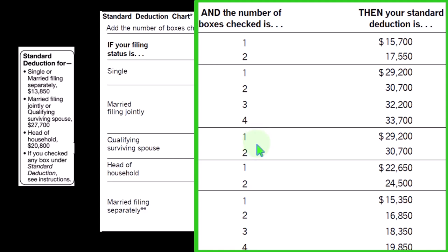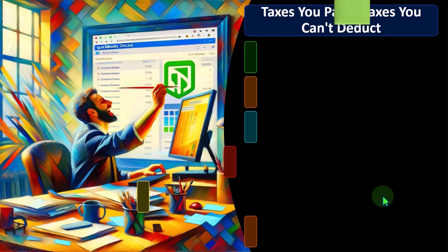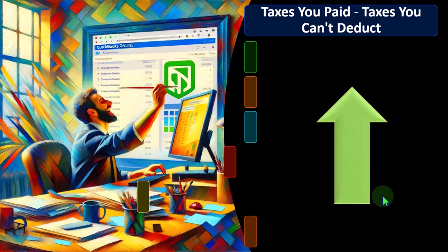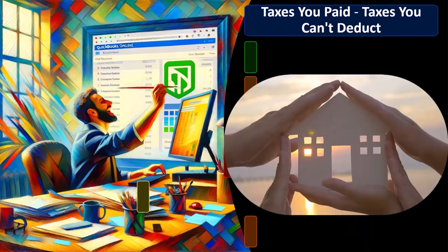Head of household and the qualified surviving spouse, and so on. Remember, the primary thing that pushes people over from taking the standard deduction to the itemized deduction is the ownership of a home, because ownership of a home typically comes with a loan, a mortgage, which comes with mortgage interest — which might be deductible as an itemized deduction — as well as related property taxes, which are a form of state and local taxes that could also be deductible for itemized deductions.